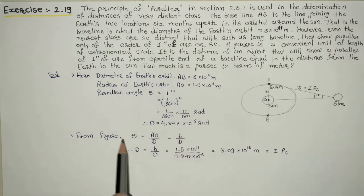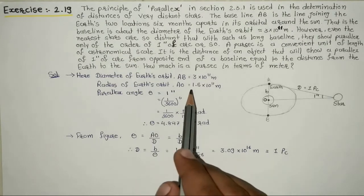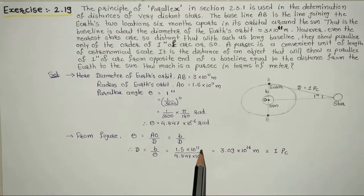We need to find d value in meters, so we make it the subject: d equals b by theta. b value is 1.5 times 10 to the power 11 meters. Theta value is 4.847 times 10 to the power minus 6. Solving this, we get d value as 3.09 times 10 to the power 16 meters, which is the value of 1 parsec in meters.